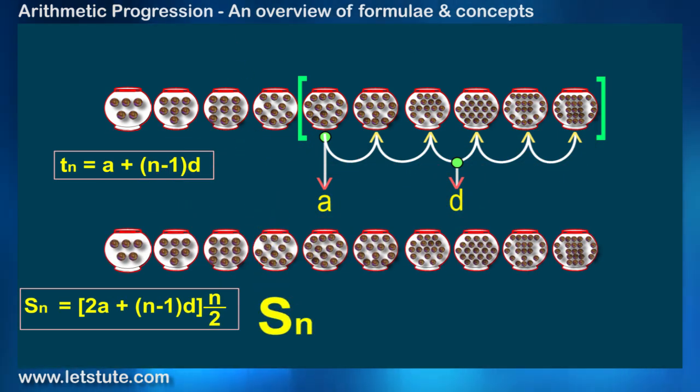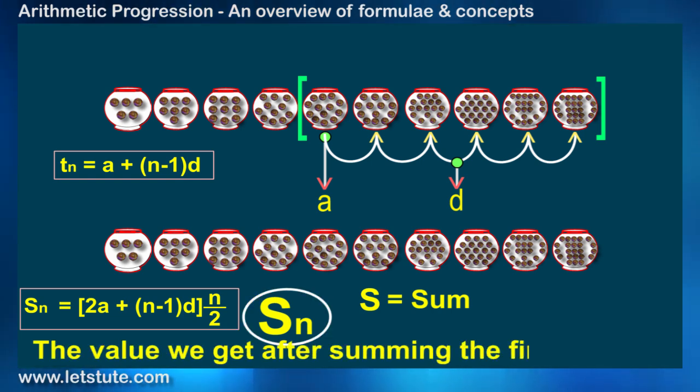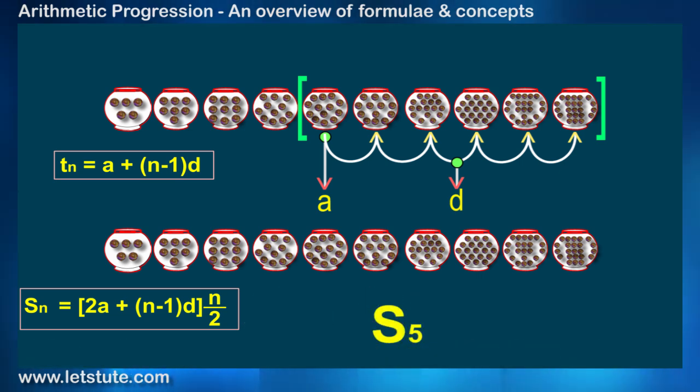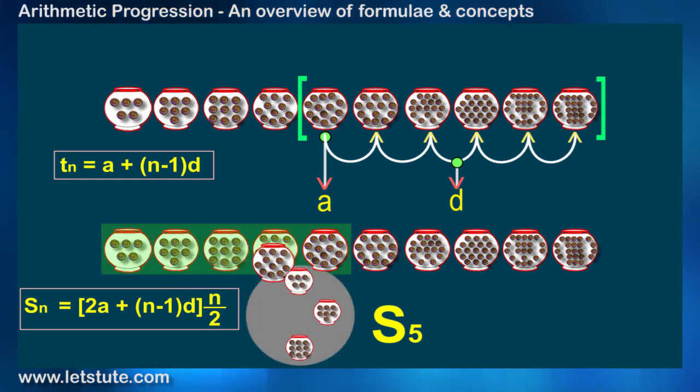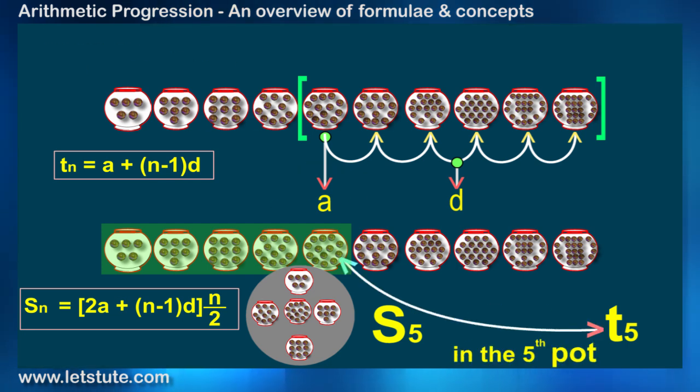Regarding Sn, here S means sum and Sn means the value we get after summing the first n terms. In our case, it is the sum of the marbles in the first n pots. If I say S5, it is the total number of marbles in the first 5 pots, whereas T5 is the number of marbles only in the 5th pot.